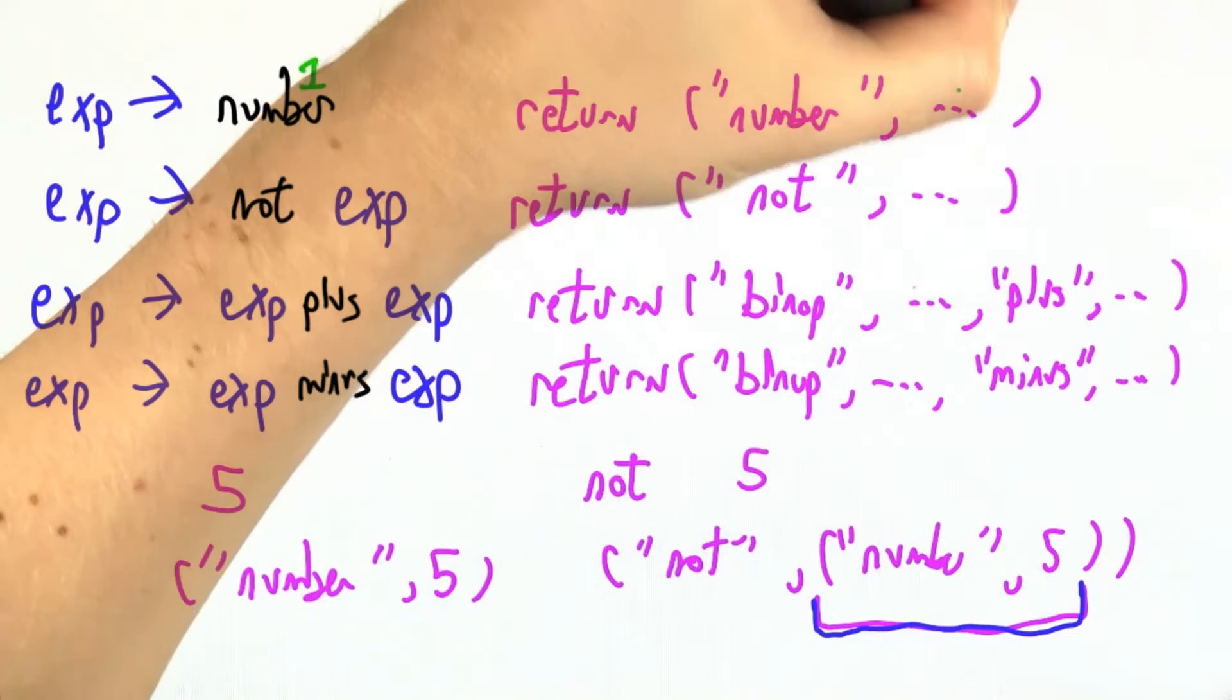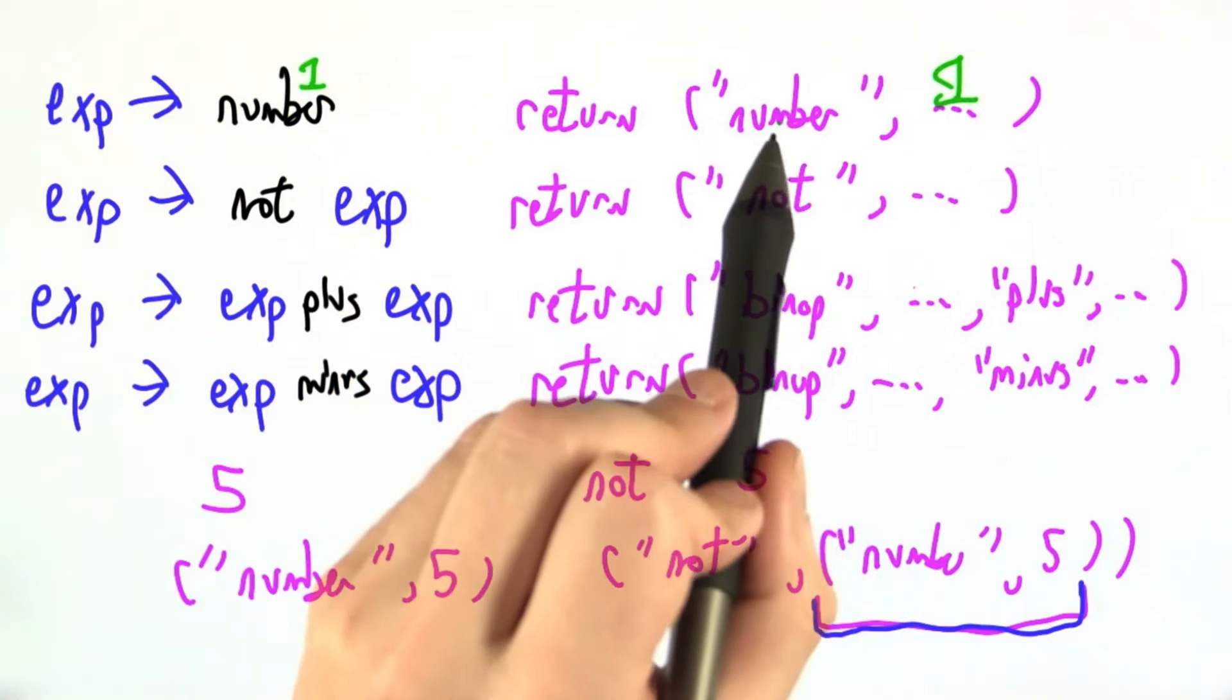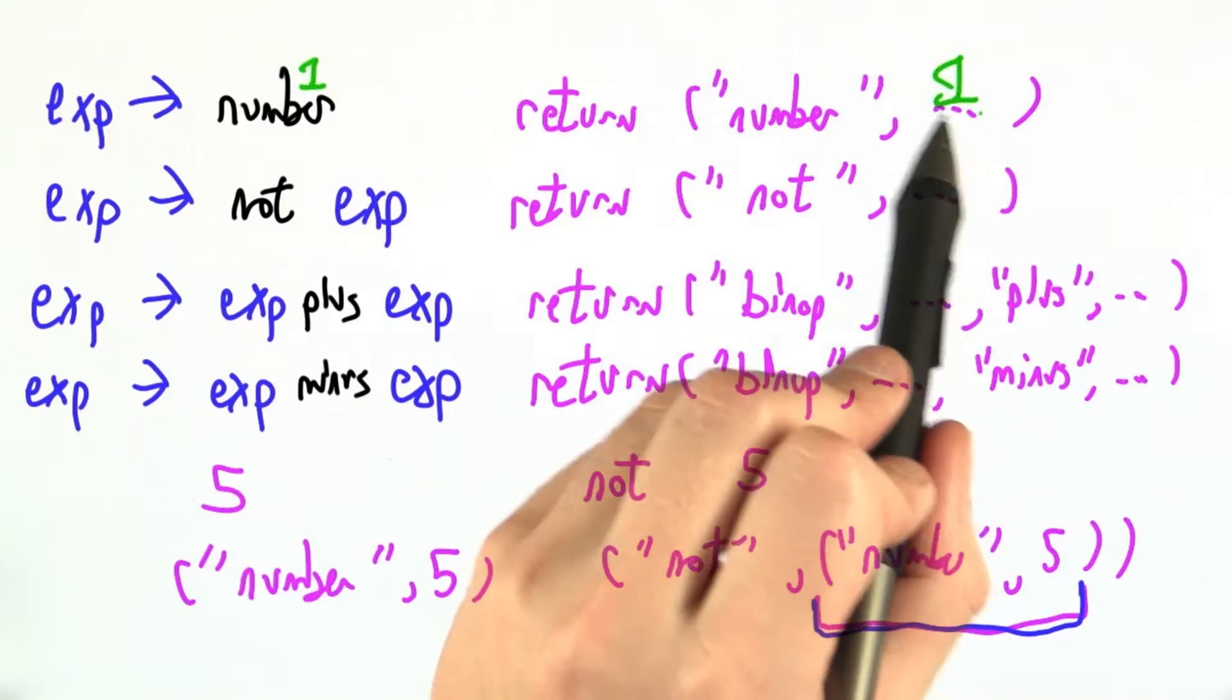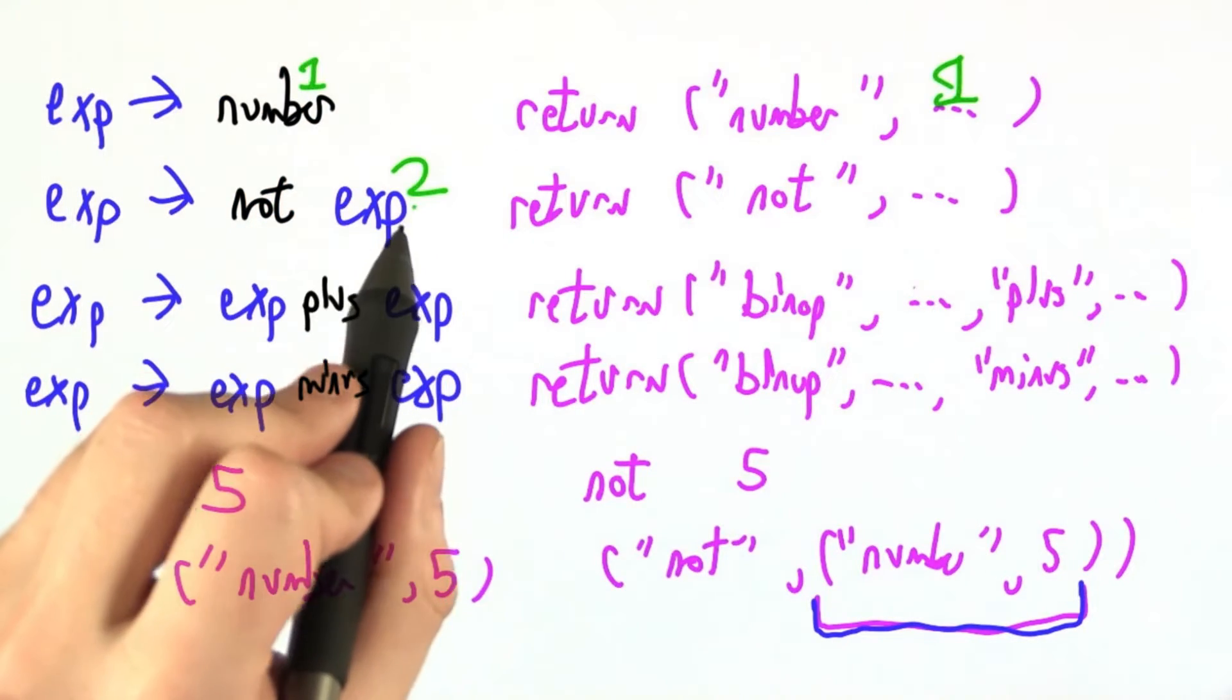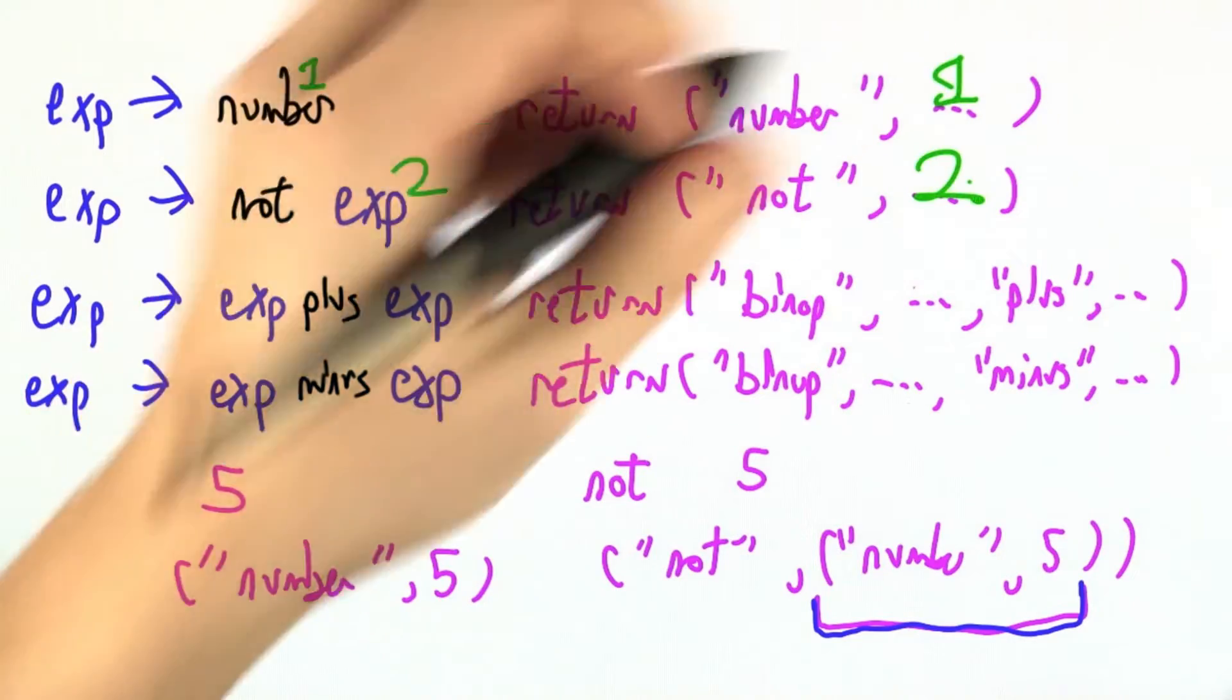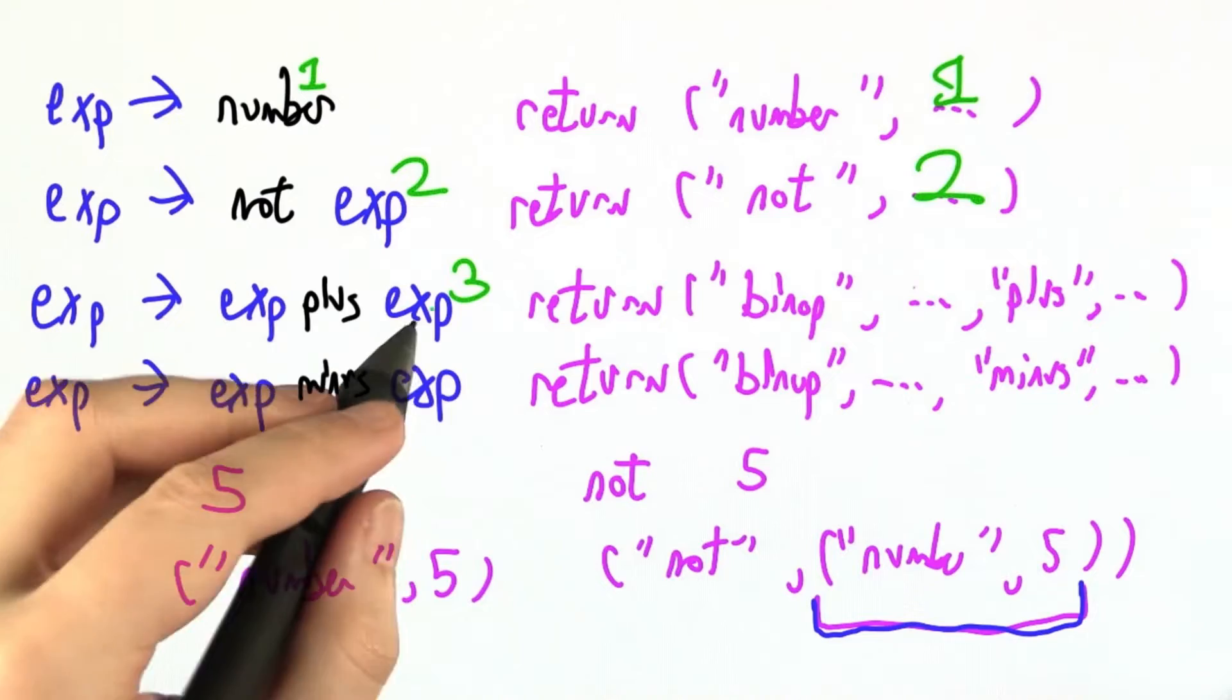So let's say I call this number number 1. We really want to return this tuple number in quotes, just as a string so we know what it is, followed by the value of the token. If this was thing number 2 in our reduction rule, not expression, I'd really want this to be filled with a 2. If over here this was a 3, I would want to return binop.